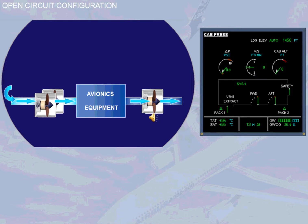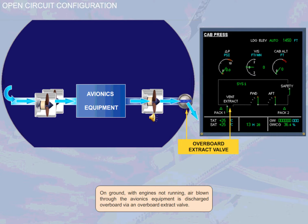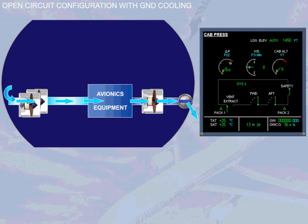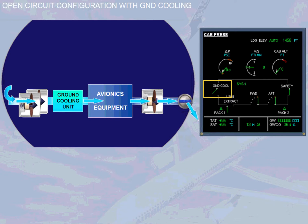On the ground with engines not running, air blown through the avionics equipment is discharged overboard via an overboard extract valve. In case of extreme hot air temperature, an optional avionics ground cooling unit can be installed. It ensures the cooling of the avionics ventilation air when the aircraft is on the ground, the engines are stopped, and the ground cool push button switch is in the AUTO position.